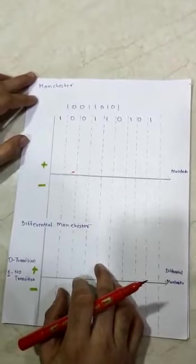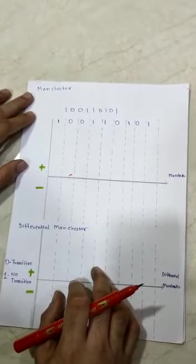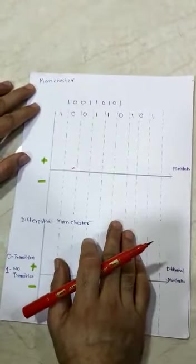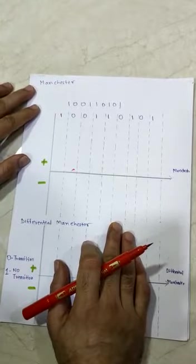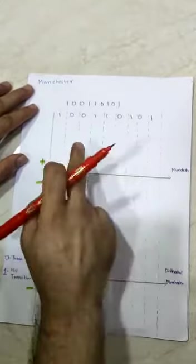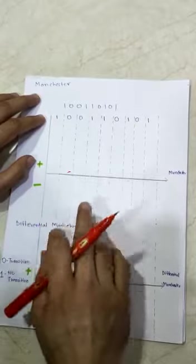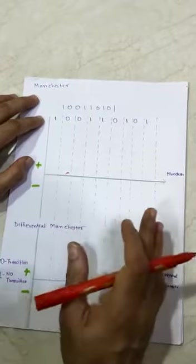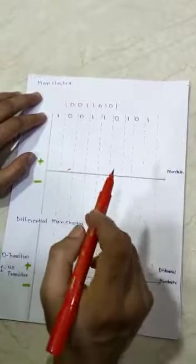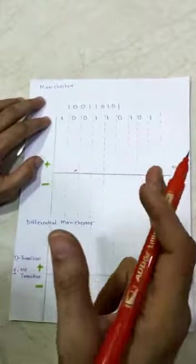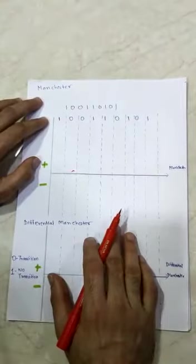Now we have completed Polar RZ. Now we have to work on Biphase, in which we have Manchester and Differential Manchester. The idea of RZ — that is Return to Zero — transition at the middle of the bit, and the idea of NRZ-L are combined into the Manchester scheme. In Manchester encoding, the duration of the bit is divided into two halves. The voltage remains at one level during the first half and moves to the other level in the second half. The transition at the middle of the bit provides synchronization.